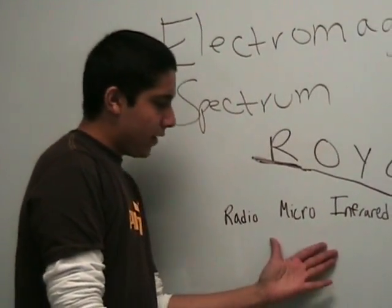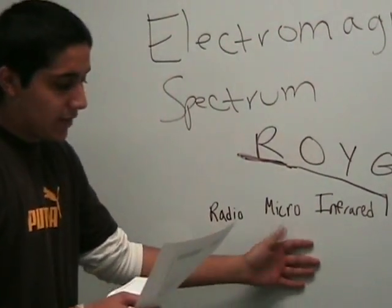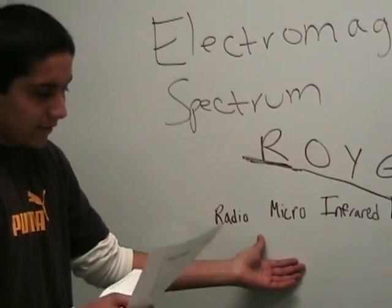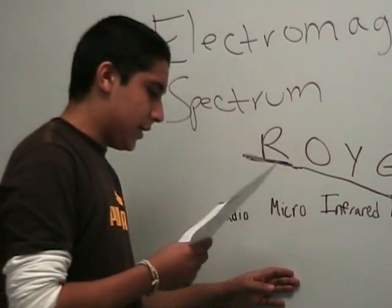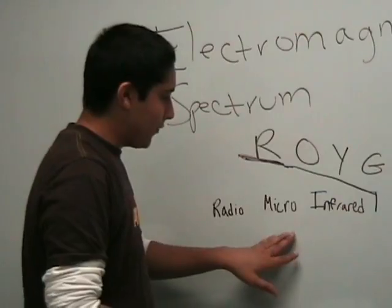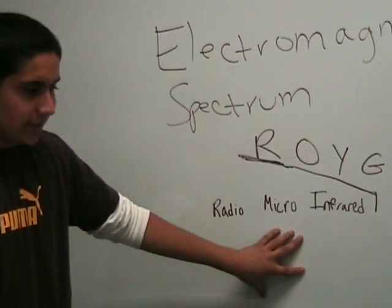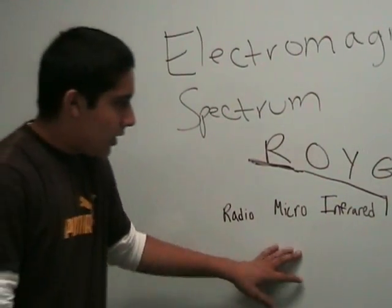Over here we have microwaves, which are used for heating things up — that's why it's called microwaves — and they're also used in wireless networks. So wherever you have a wireless network and connect to the internet, microwaves are used.